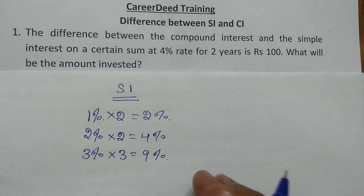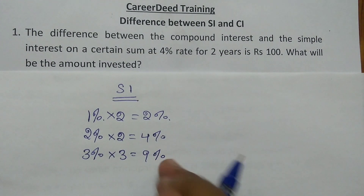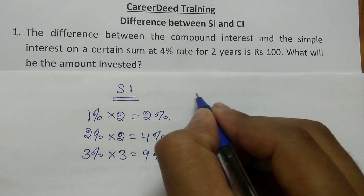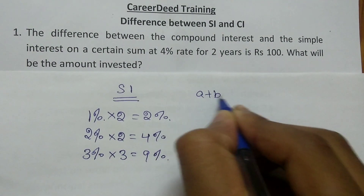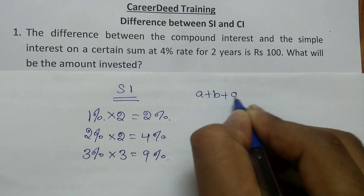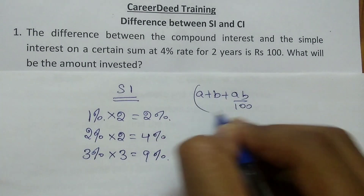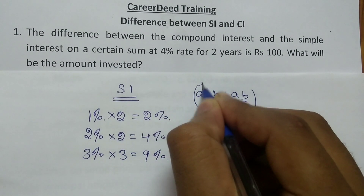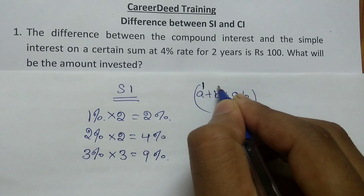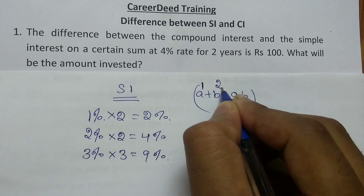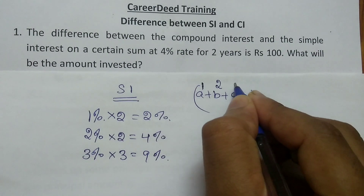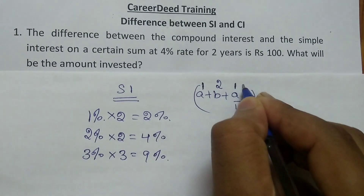But in compound interest this simple multiplication is not possible — we have to use a formula, which we also discussed in the previous video: A + B + (A×B)/100. Here A represents the first year's interest, B represents the second year's interest, and the AB term represents interest on the first year's interest.